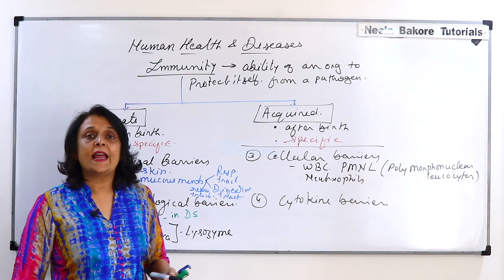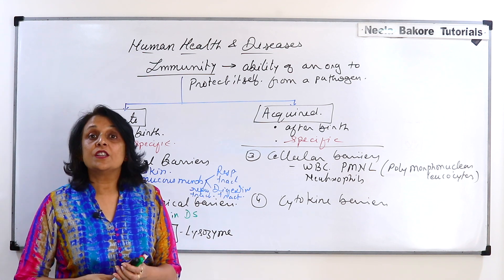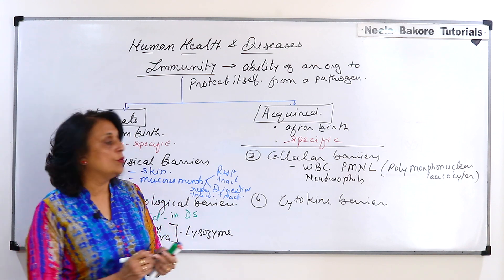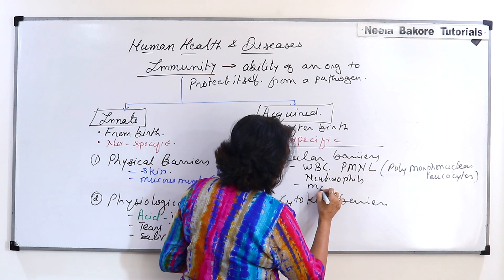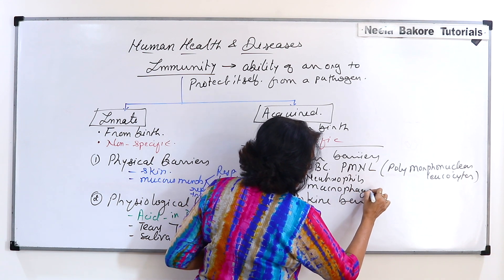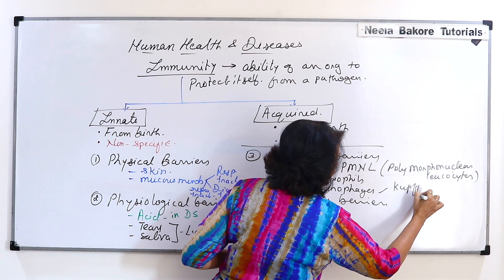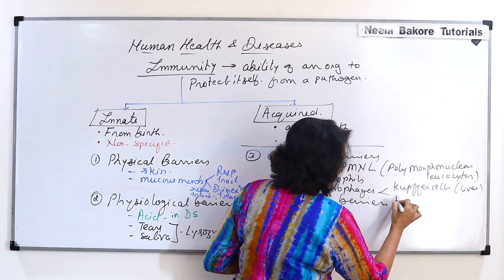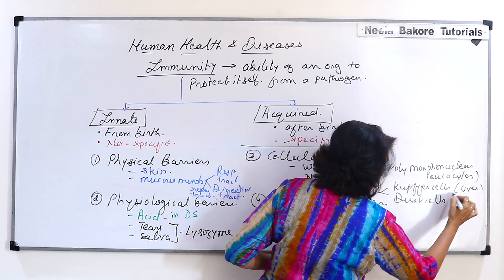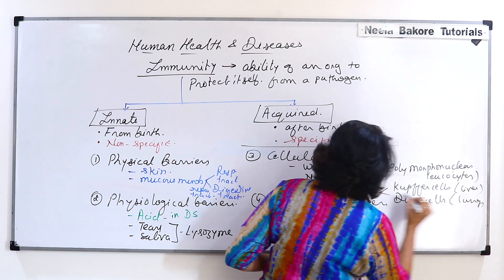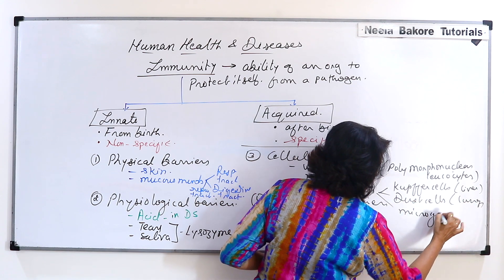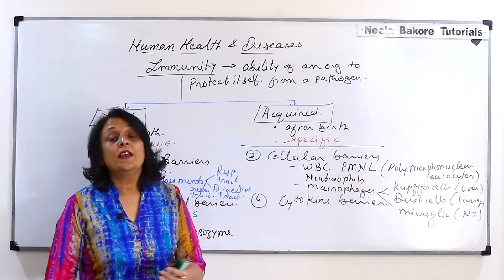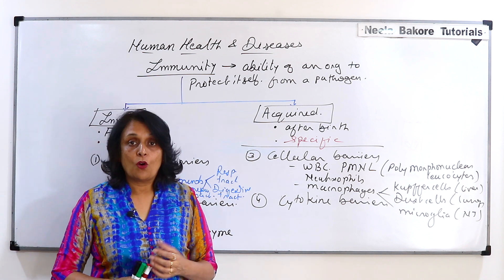Apart from WBCs there are other phagocytic cells which are generally termed as macrophages. And depending upon the location we have given different names to these macrophages like Kupfer cells of liver, dust cells of lungs, microglia of nervous tissue. So these are the cells which are going to help in protection of our body.